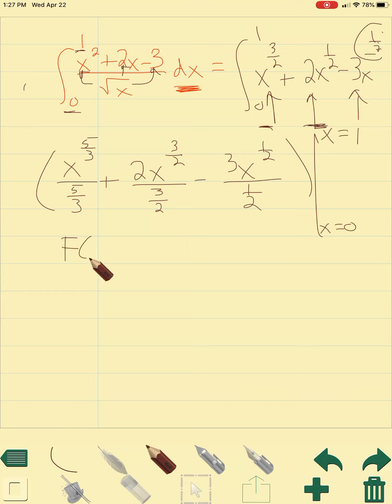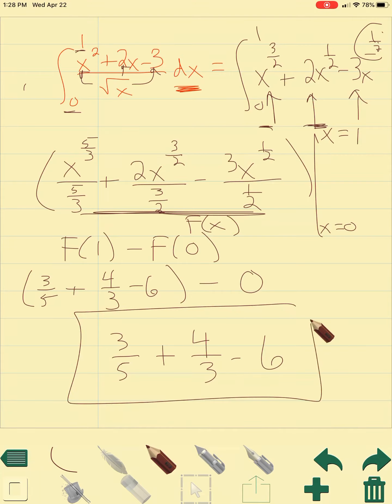Remember this is really f of 1 minus f of 0. So if I plug in 1, you get 3 fifths plus 4 thirds and then minus 6. If I plug in 0, f of 0 is just 0 in this case. So you get 3 fifths plus 4 thirds minus 6. I'm just going to leave that, for timing purposes, as my answer.